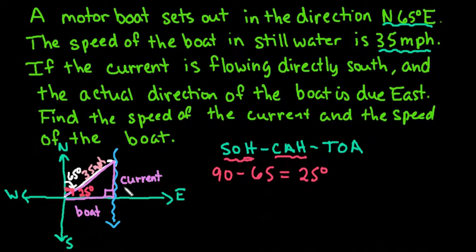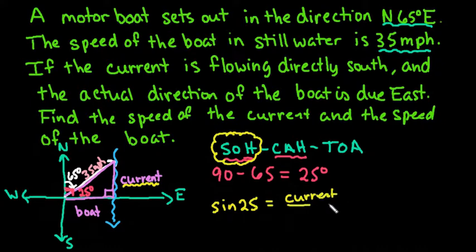Let's start with the current. The current is opposite, so for this one we're going to use sine. So I can say that sine of 25 is equal to the current speed divided by the hypotenuse, which is 35 miles per hour.